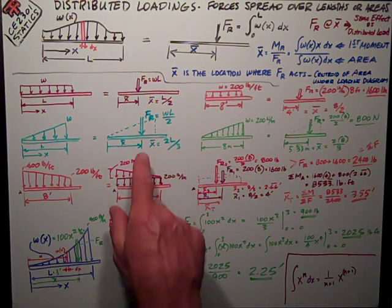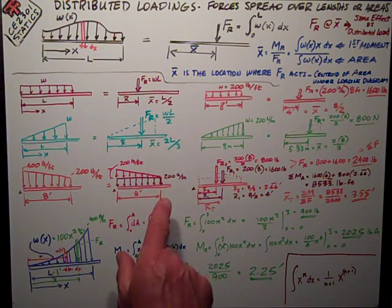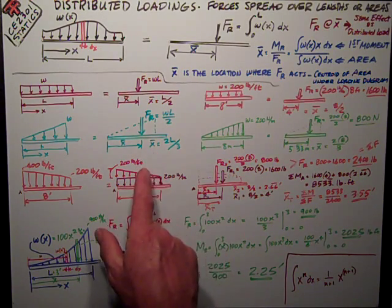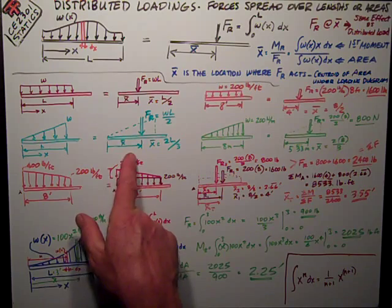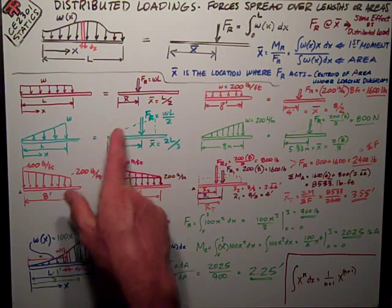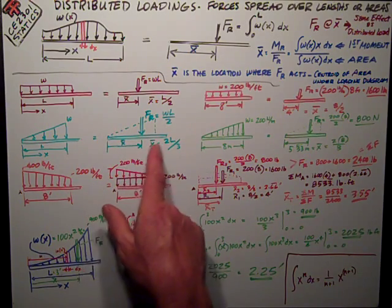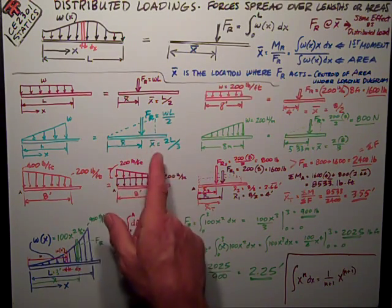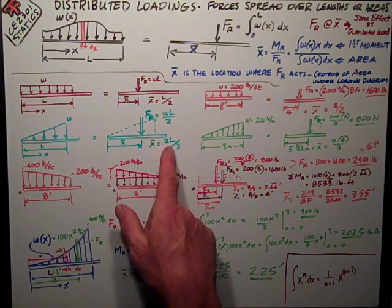And we can say that the centroid of a triangle, the x-bar distance, is two-thirds from the tip, from the narrow, the small end of the triangle. So it's two-thirds of the base, in this case, two-thirds of l.